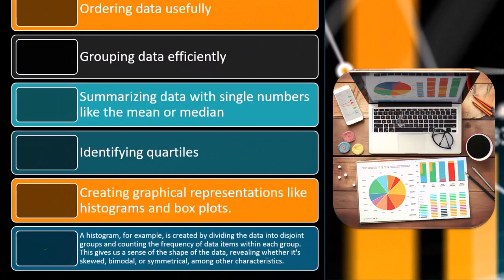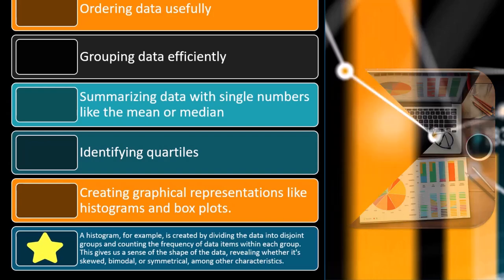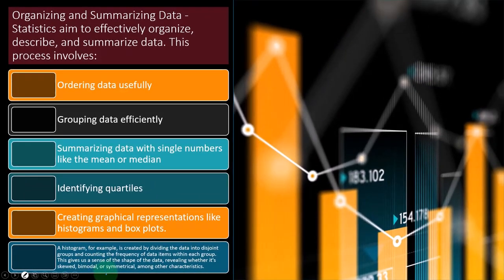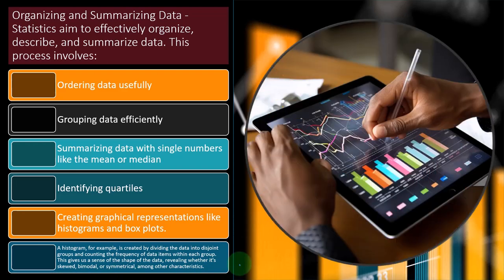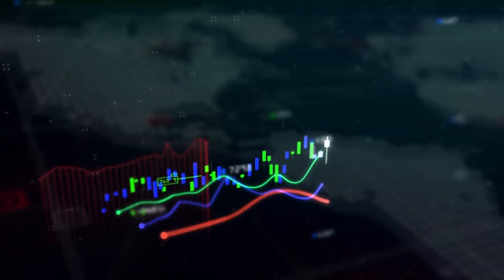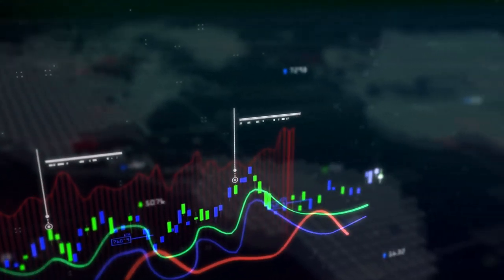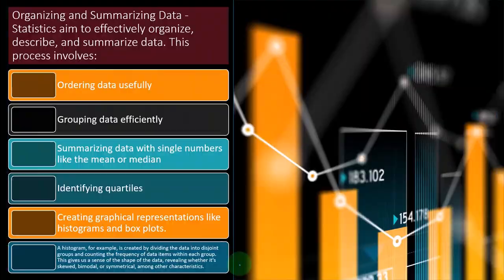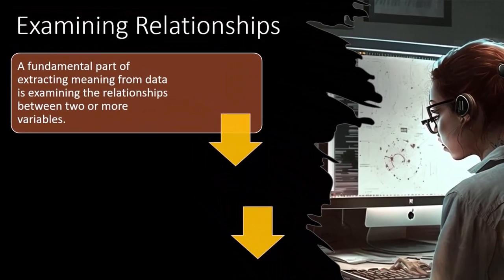And then we'll make histograms. So this gives us a sense of the shape of the data, revealing whether it's skewed, bimodal, or symmetrical, among other characteristics. So in other words, these are terms that we're going to be using to describe the shape of the data. So once we see the data, we can say, is it skewed? Meaning, is there going to be more data? Like, does it have a tail to it? It seems to tail off on one side of the data. Is it bimodal? Are there two humps like a camel in the data? As it's symmetrical around the center, it looks more similar to like a bell curve type of shape. So these are kind of characteristic terms that we can use to describe the data.